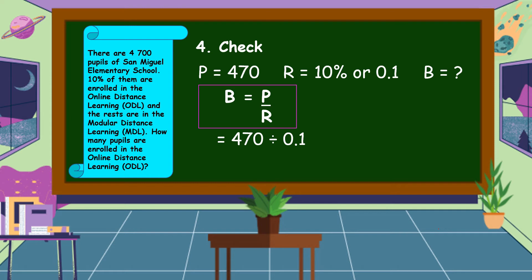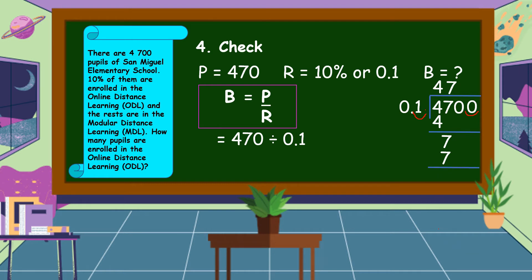So, 470 divided by one-tenth. To divide, we first make our divisor a whole number by moving the decimal point to the rightmost of the number — we move one decimal place, and also move one decimal place in our dividend, placing a zero as a placeholder. Then dividing: 4 ÷ 1 = 4, bring down 7, 7 ÷ 1 = 7, then bring up two zeros in our quotient. Therefore, the base is equal to 4,700. Our answer is correct.